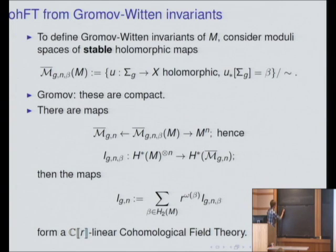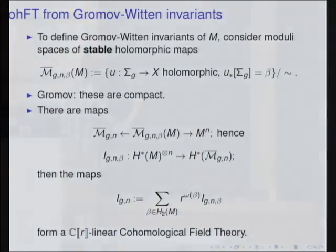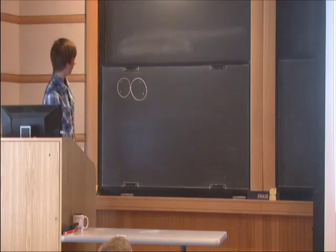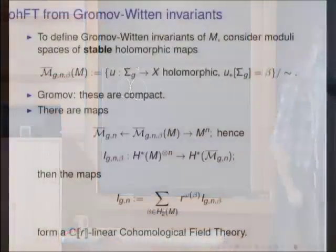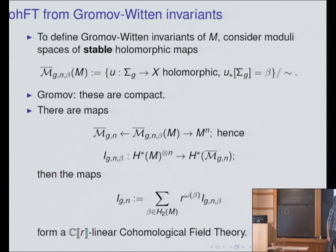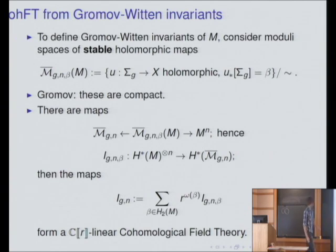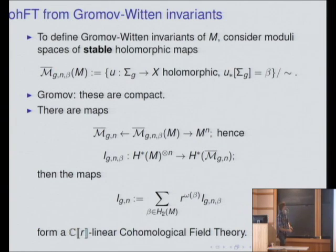These maps should be compatible with inclusions of boundary strata where you glue two Riemann surfaces together to make a nodal Riemann surface. To actually get a cohomological field theory from Gromov-Witten invariants, you consider moduli spaces of stable holomorphic maps — Riemann surfaces that maybe have some marked points and are also allowed to have nodes. Then you look at holomorphic maps of a Riemann surface into your manifold in a fixed homology class, up to reparametrization.